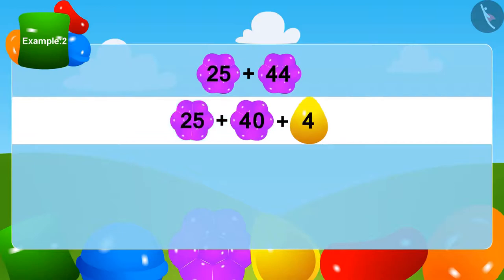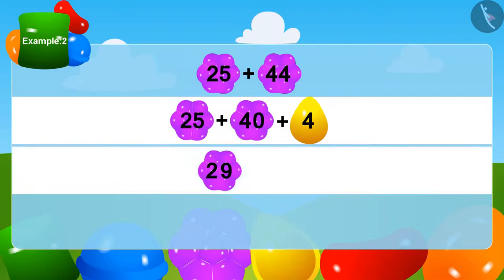We can write 44 as 40 plus 4. Is this right, children? Now, we will add 4 to 25 and this will be 29.